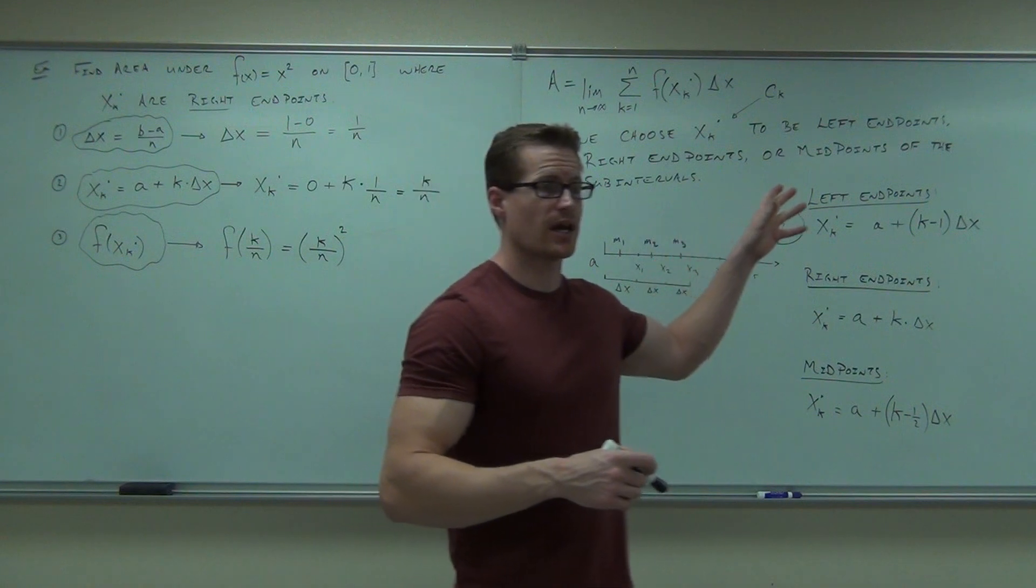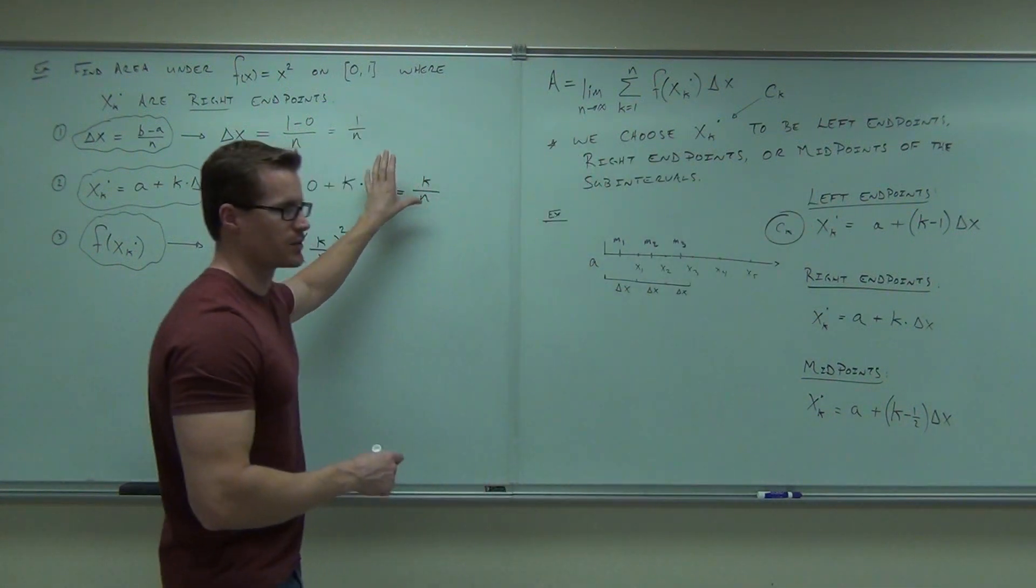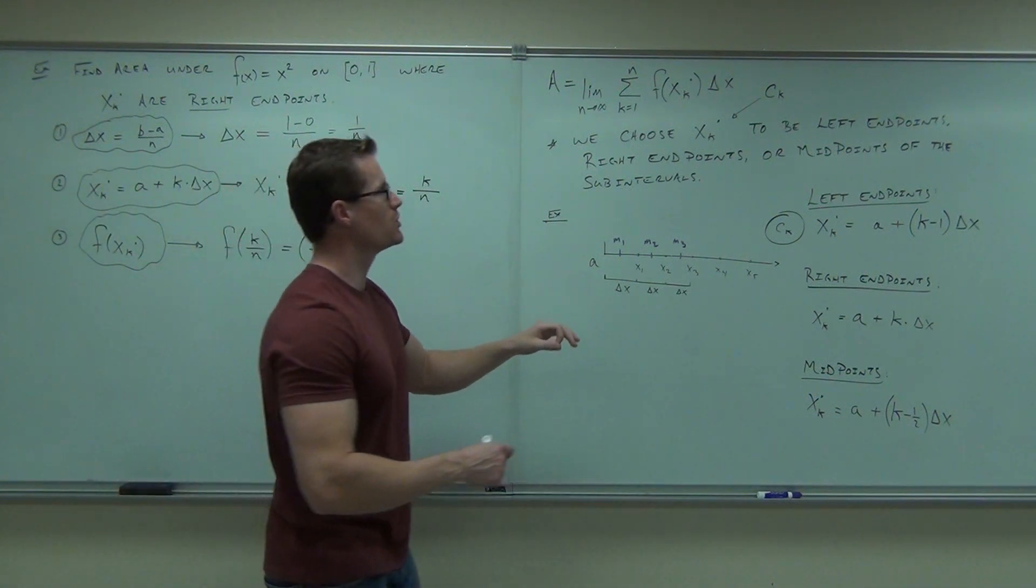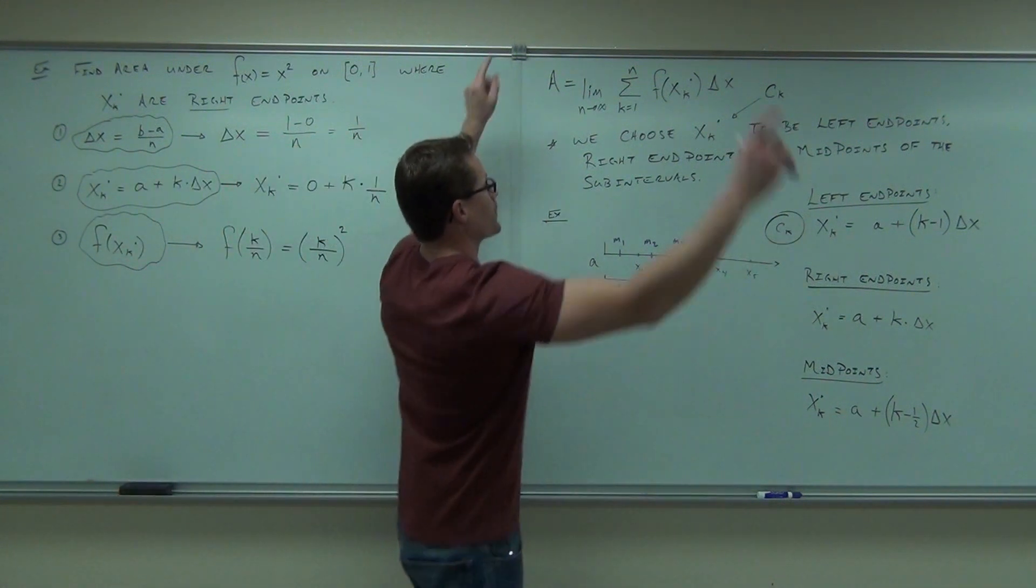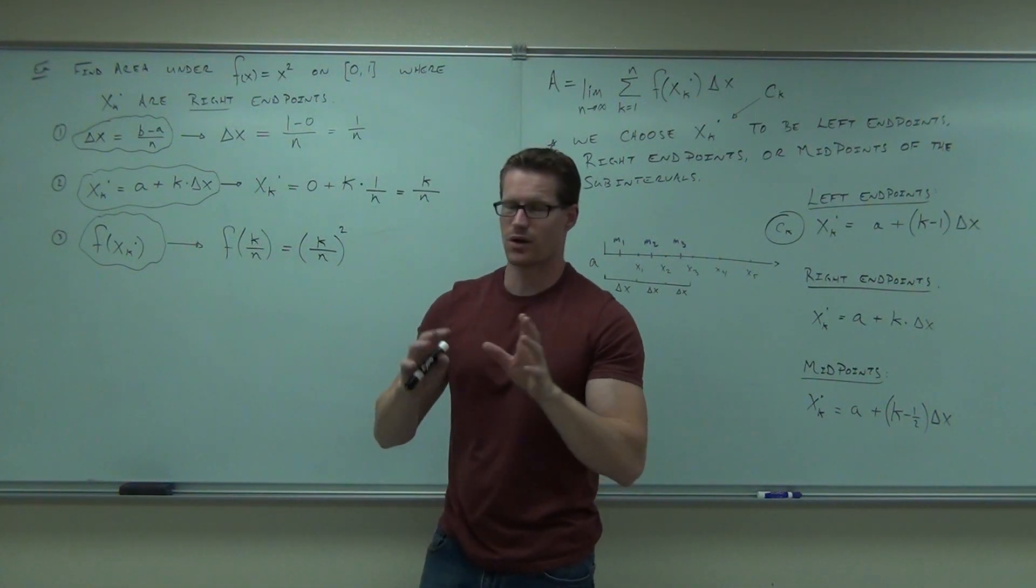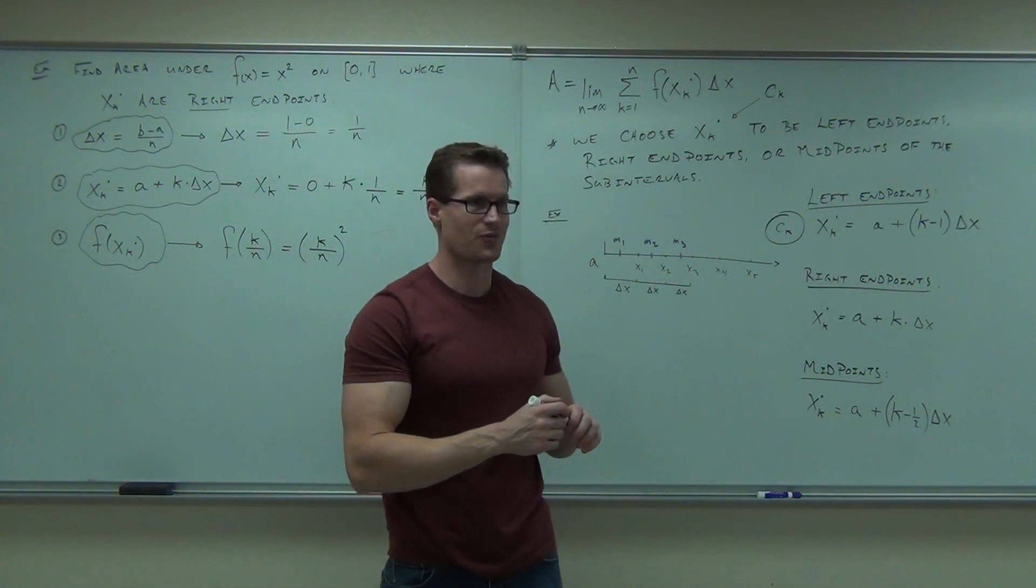As soon as you have your delta x, great. You can find your x_k. No problem. You can find your f of x_k. Now the last thing we're going to do, take all the stuff, put it right up there, and we'll have enough to do our integral, I'm sorry, our limit of our summation. You ready for it?